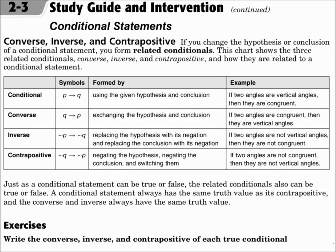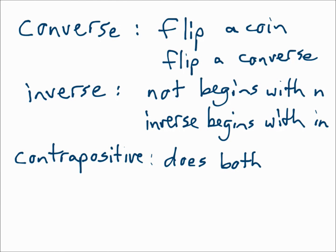Converse, inverse, and contrapositive are three related conditionals connected to the original conditional statement. Look at the chart: the conditional statement goes from P to Q. The converse flips it to Q to P. The inverse puts a 'not' in each part: not P to not Q. The contrapositive flips it and puts a 'not' in each part: not Q to not P. To remember: the converse flips it — flip a coin, flip a converse.